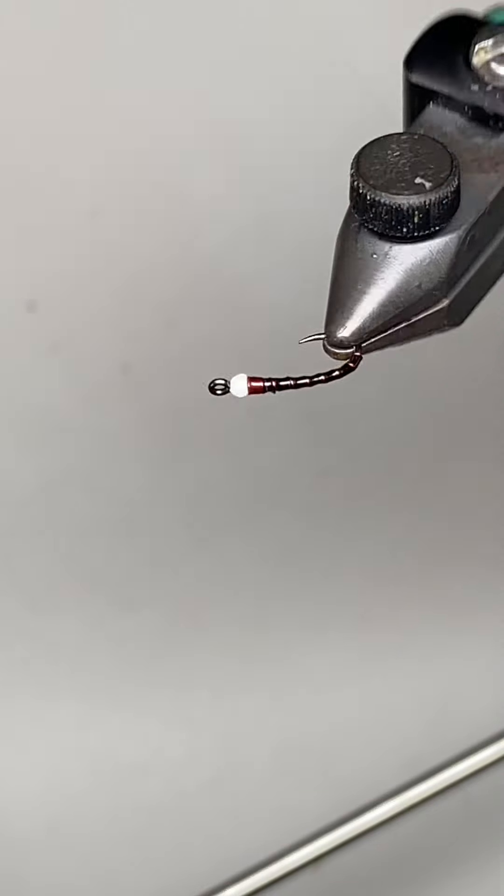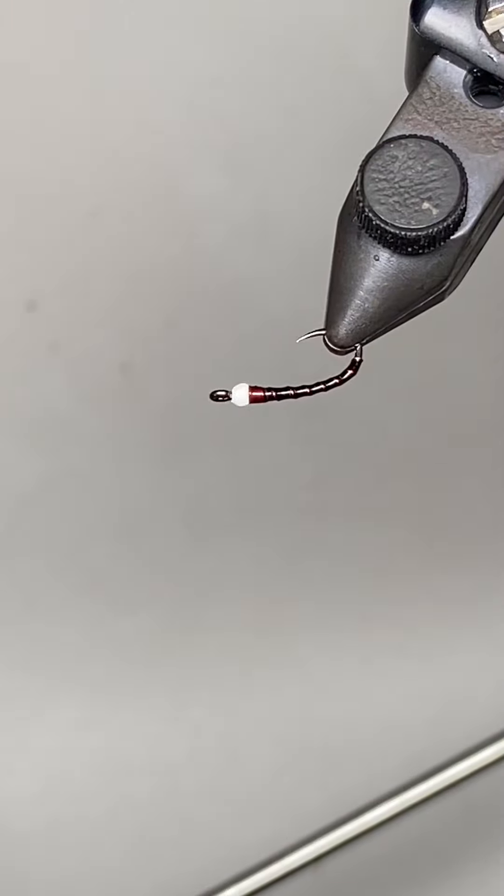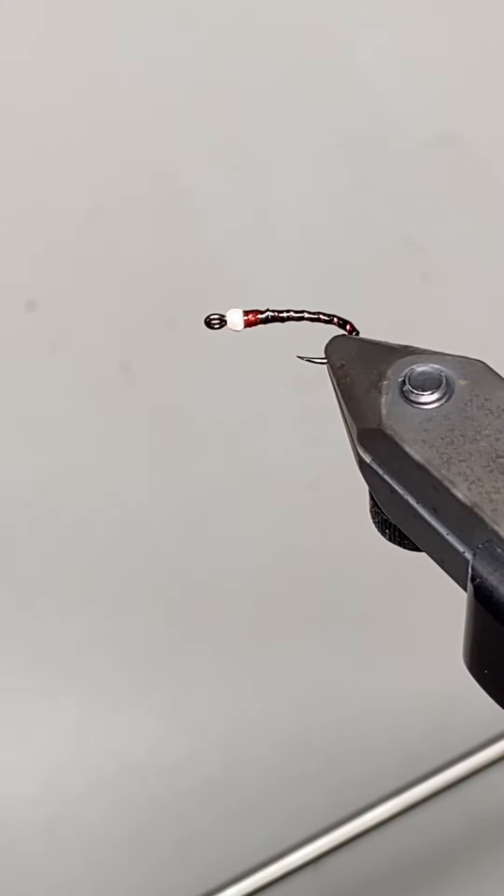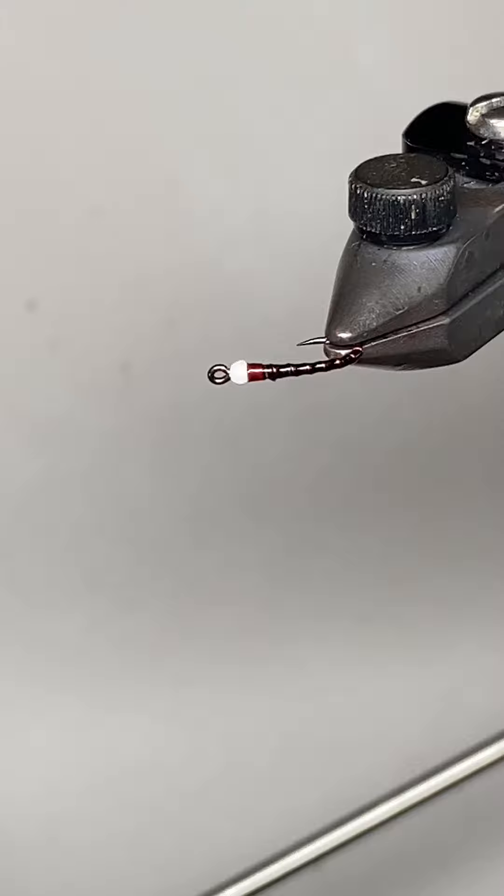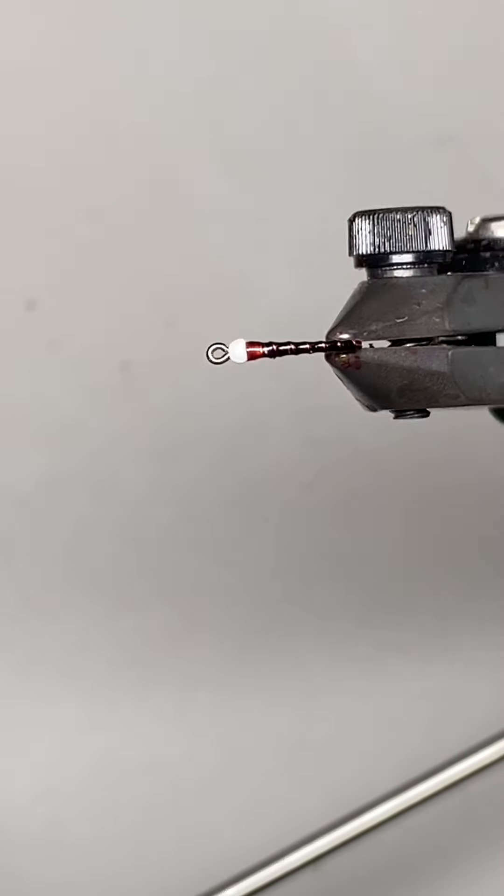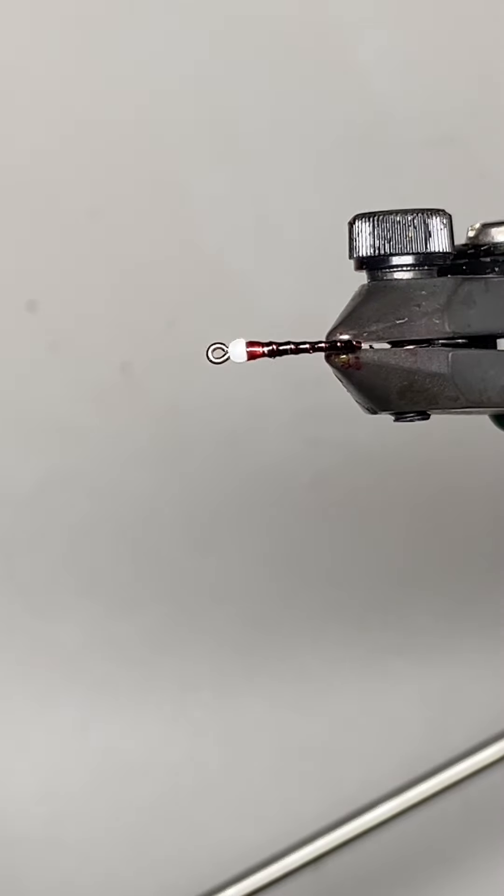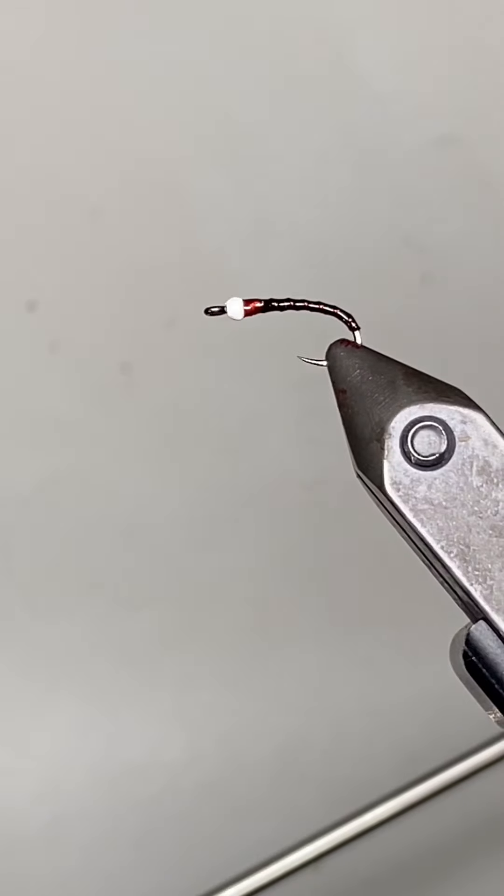And that's it. So there you have a size 18 Chronimid tying in two materials using only one thread. You can see that the profile is super slender. There's no buildup and there's no bulk and it's just a really nice little pattern. So I hope that helps, gives you some ideas on how you can keep your profiles nice and slim and overall become a better tier. Thanks for watching.